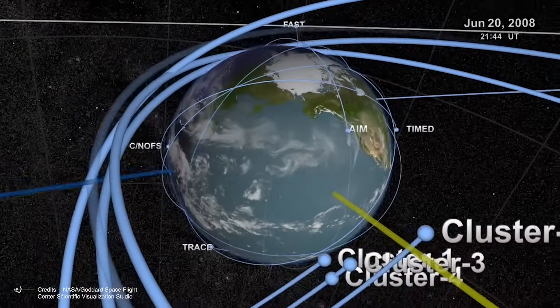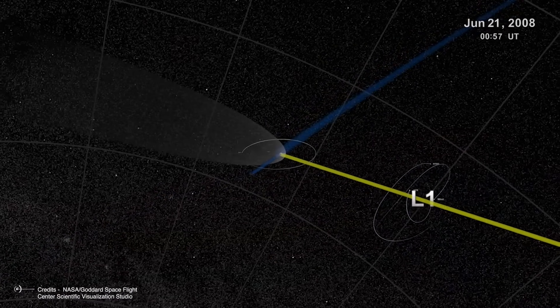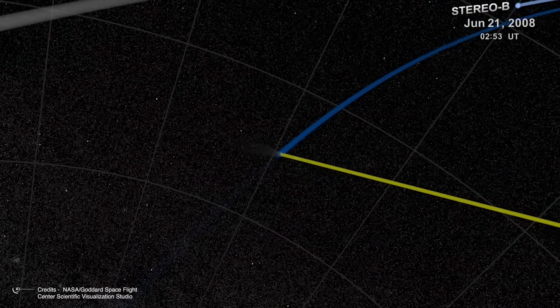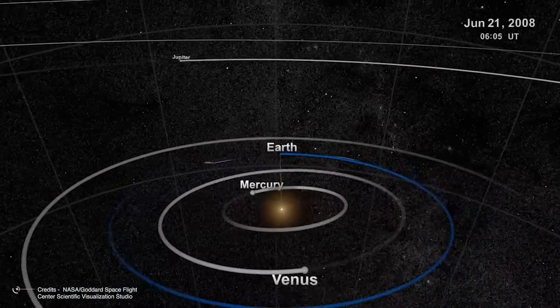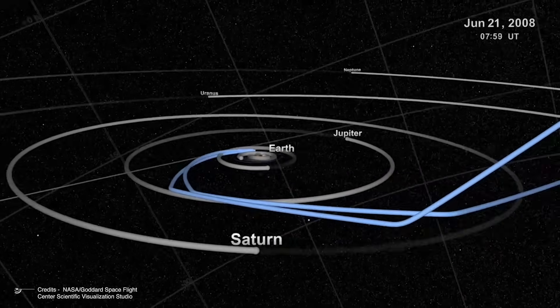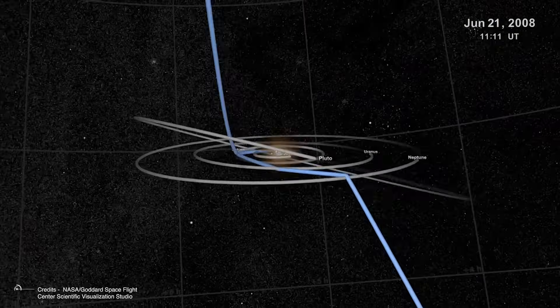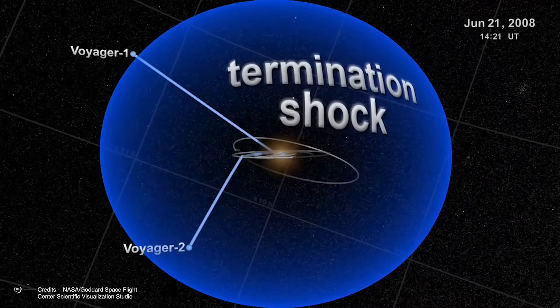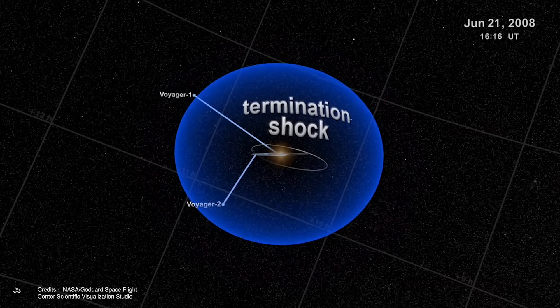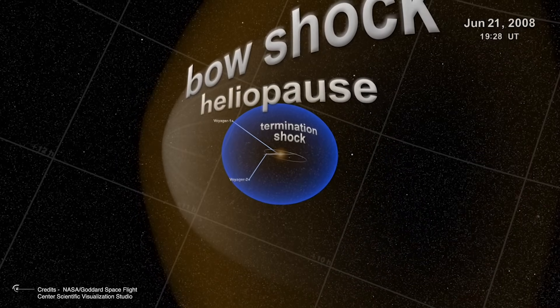The implications are profound. If the majority of our solar system's volume consists of these spherical structures extending far beyond and below the planetary plane, then our conventional understanding is not just incomplete, it's fundamentally misleading. The flat disk represents only a tiny fraction of our cosmic neighborhood, while the vast majority extends in three dimensions all around us. This isn't just an academic distinction—it completely transforms how we should understand our place in the cosmos and raises serious questions about what else might be present in these vast, largely unexplored regions.